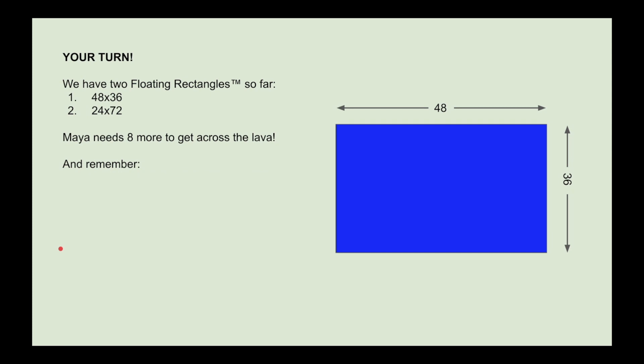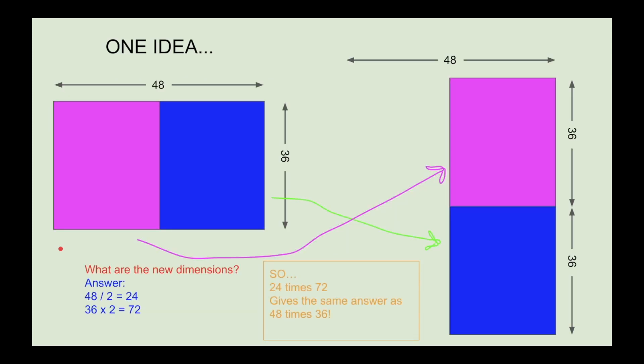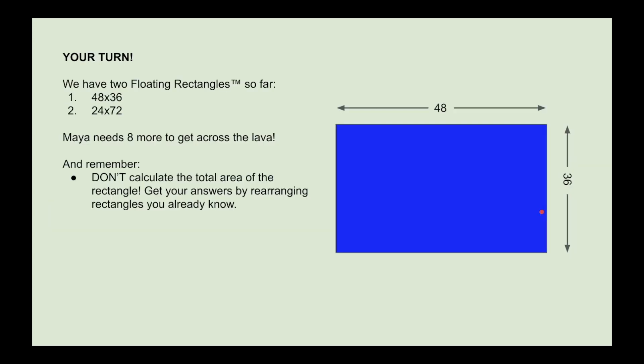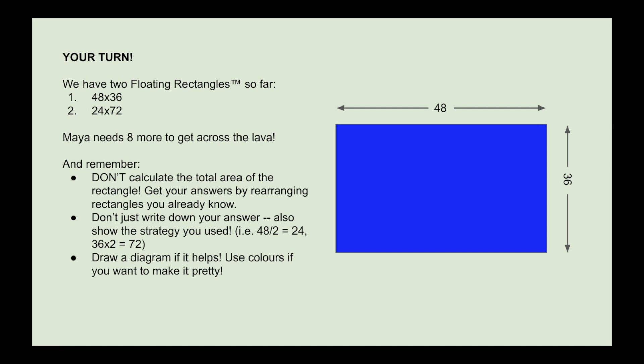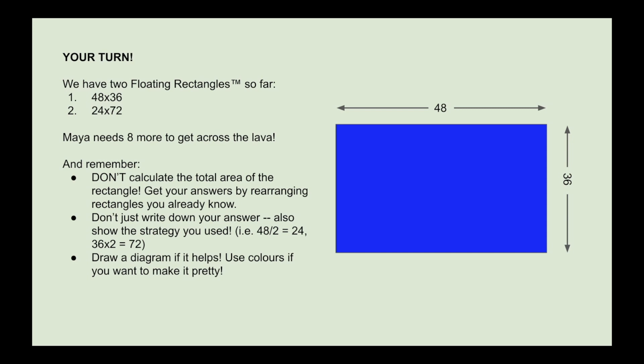So show the strategy with this division and multiplication, and draw a diagram if it helps, like we did on the previous slide where we took this rectangle and split it up and moved it around. If it helps you to do it that way, you can even make a rectangle out of paper and cut it up and reconfigure it yourself. You can use colors if you want to make it prettier, you can use software, do it on the computer if you know how to use graphics programs. Okay, so pause the video here and try this question. See if you can get eight more rectangles.